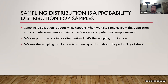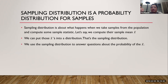A sampling distribution is similar — it's like a probability distribution, but for samples. A sampling distribution is about what happens when we take samples from the population and compute some sample statistic. That could be a sample proportion, sample mean, sample median, sample standard deviation, and so on.